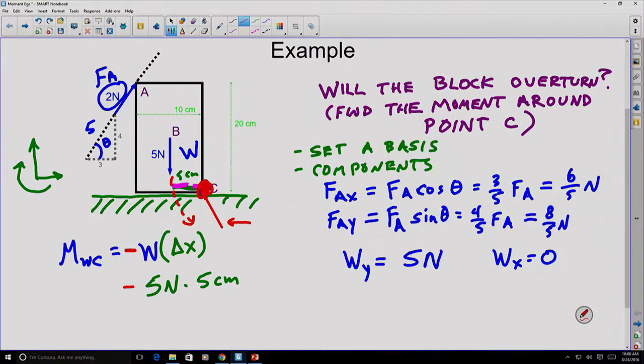So negative five newtons times five centimeters or negative 25 newton centimeters. That's going to be the moment caused by the weight.